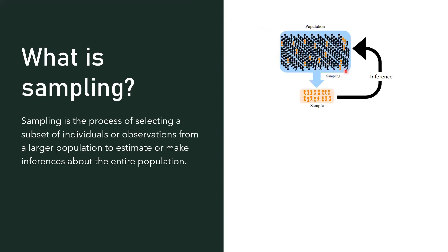In other words, you can think of sampling as taking a subset from a population. Here we select the sample, and how we select the sample is really important — because you don't want to take a sample of just the people in the left corner or just the people in the right corner. Because then the inference could be that everybody in this population lives in that corner, when in reality the people in the population are living everywhere.